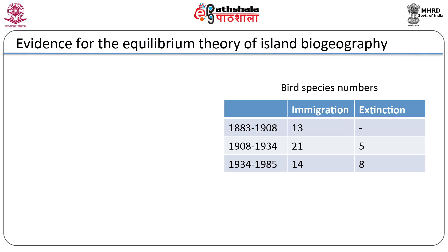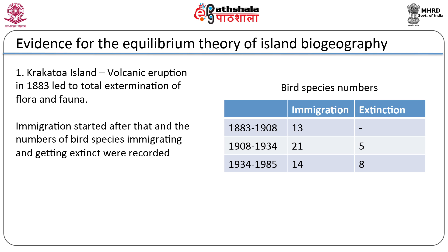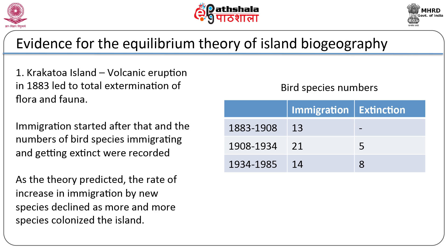Evidence for the equilibrium theory of island biogeography — how well does it explain what we actually observe in nature? One famous test of the theory was provided in 1883 by a catastrophic volcanic explosion that devastated the island of Krakatoa, located between the islands of Sumatra and Java. The flora and fauna of the remnant island and two adjacent islands were completely exterminated, yet within 25 years 13 species of birds had recolonized what was left of the island. Between the explosion and 1934, 34 species became established but 5 went extinct. In 1984–85, 35 species were present. During 1934 to 1985, a further 14 species had become established and 8 had become extinct. As the theory predicted, the rate of increase declined as more and more species colonized the island, and as equilibrium was approached there was some turnover.